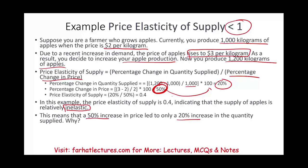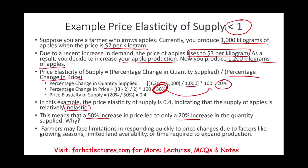Why is that the case? Because you can't just grow more apples instantly — it takes time, sometimes years. Farmers face limitations in responding quickly to price changes due to factors like the growing season, limited land availability, or the time required to plant trees and expand production.